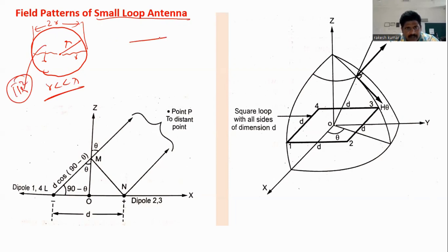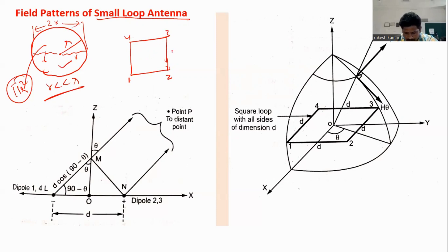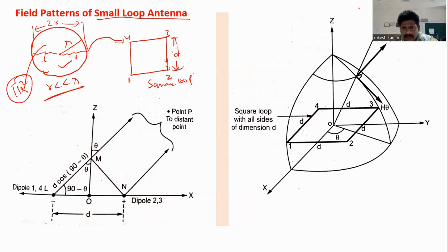With the same area, I am also taking a square loop. The square loop has four sides, and whatever the area of the circular loop, this square loop has the same area. The side of the square is the square root of the area. In this diagram, I have kept my square loop antenna with a side length of d.